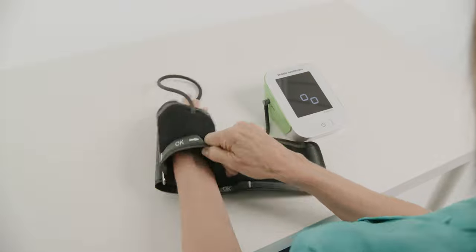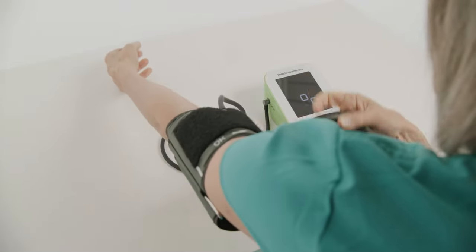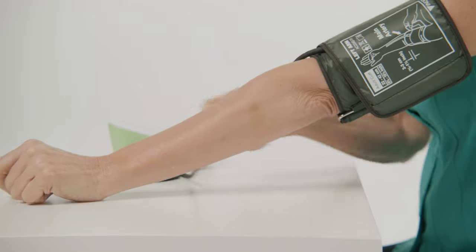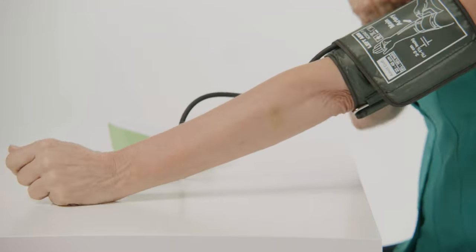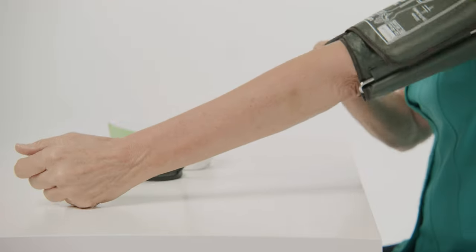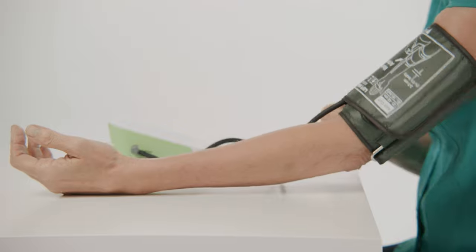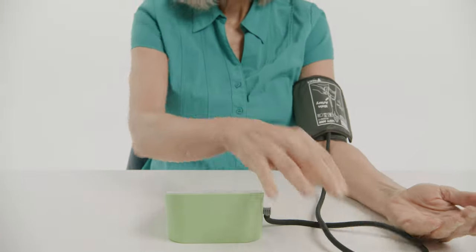Place the device in front of you and rest your left arm on the table with your palm facing up. Slide the cuff onto your left arm and align the tubing along the middle of your upper arm as indicated on the cuff. Make sure the artery line on the cuff is positioned over your artery. Adjust the cuff if necessary.